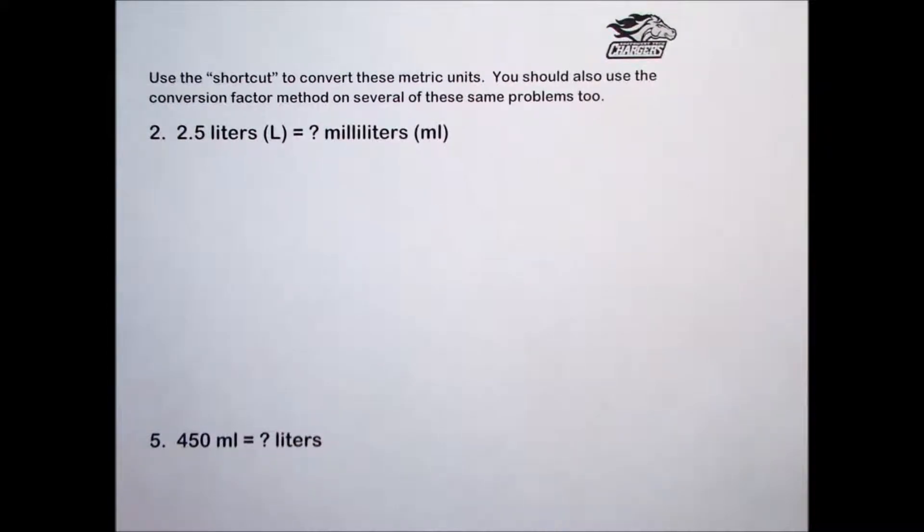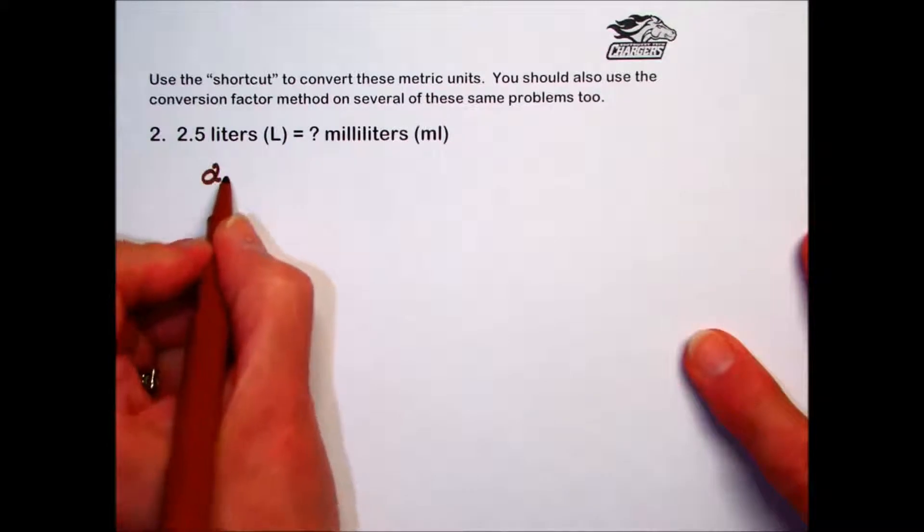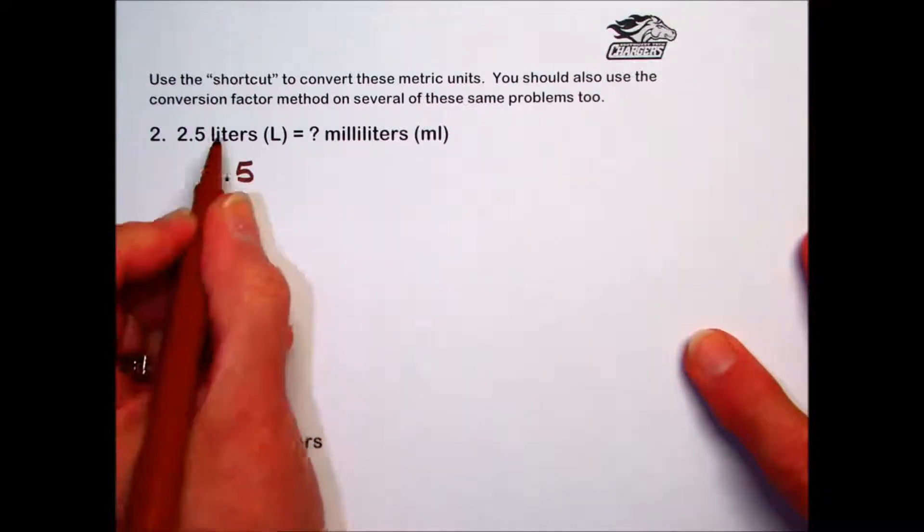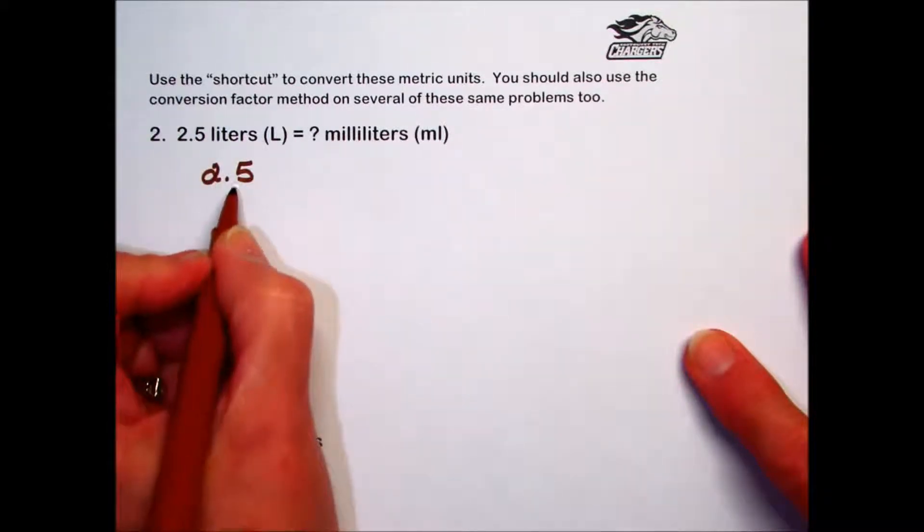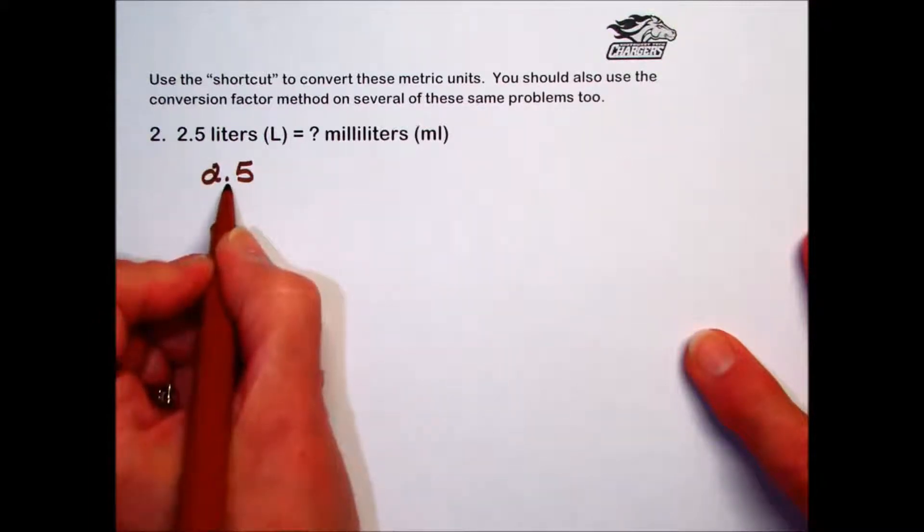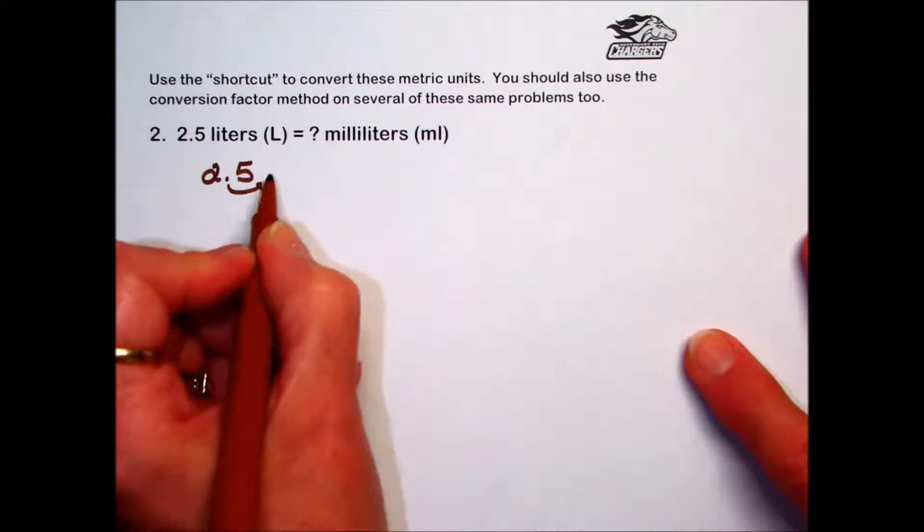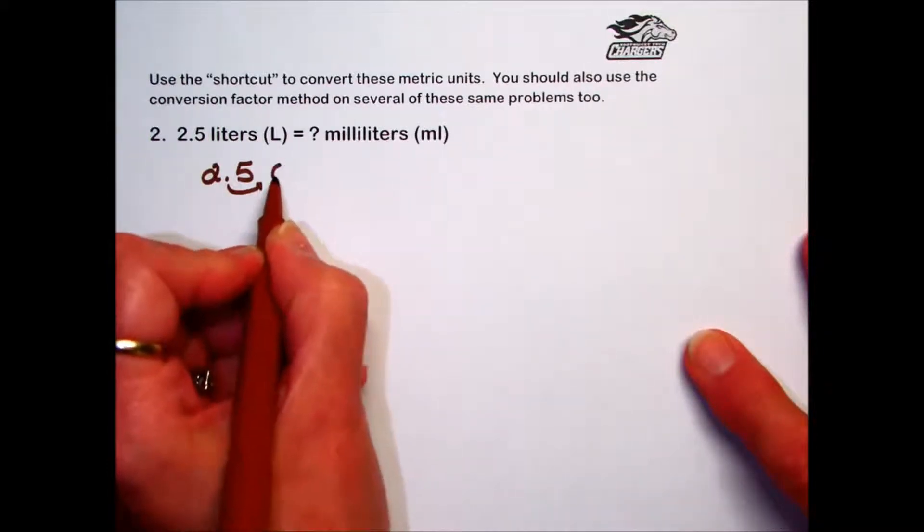We'll do that same 3 decimal places to the right on our number. So the given value is 2.5 in liters. To go to milliliters, just as the prefixes indicated, we'll do the same movement, 3 decimal places to the right. The problem is we don't have any more. No problem.